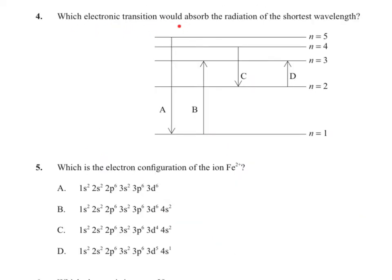Question 4 asks which electron transition absorbs radiation of the shortest wavelength. Shortest wavelength means high frequency and high energy — we are looking at the ultraviolet side of the electromagnetic spectrum. In option A the electron is going down, so it is emitting energy; same for C. Options B and D involve energy coming in to promote the electron to a higher energy level. Option D involves a very short transition, so it absorbs a long wavelength on the infrared side. Option B is our most likely candidate for the highest energy absorption.